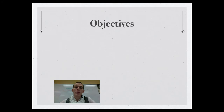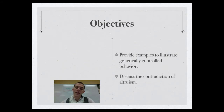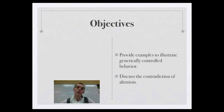By the end of this video there are two things I want you to know or be able to do. The first is to be able to provide examples to illustrate genetically controlled behavior, and the second is to discuss the contradiction of altruism. Those are the things I need you to know — let's start talking about some stuff.